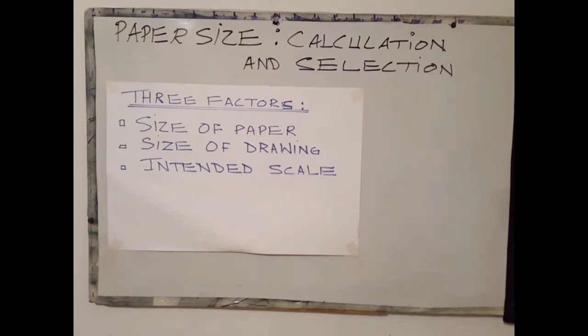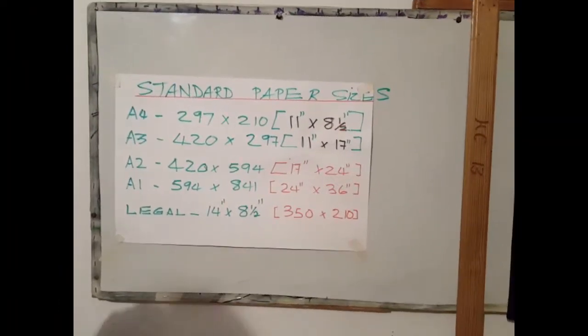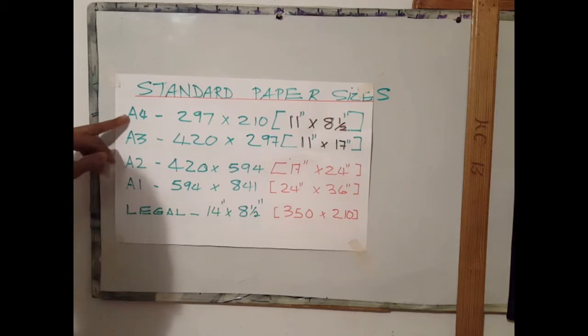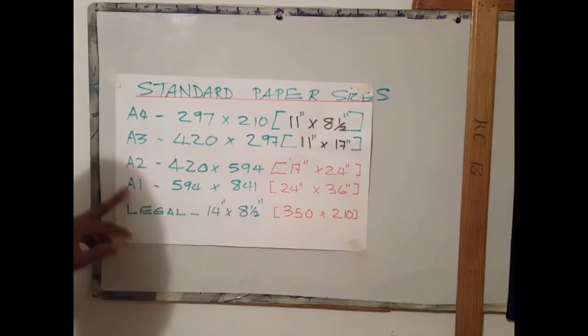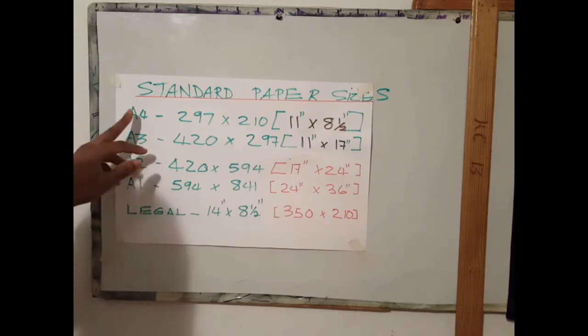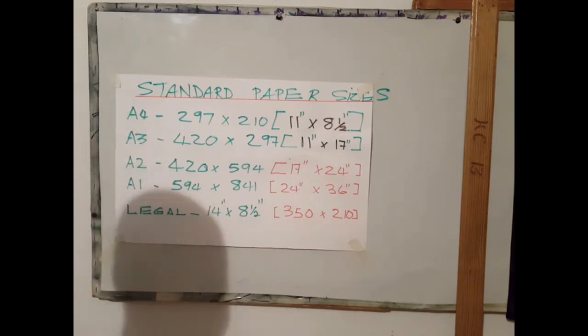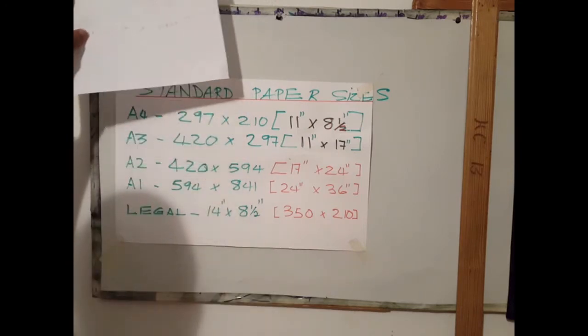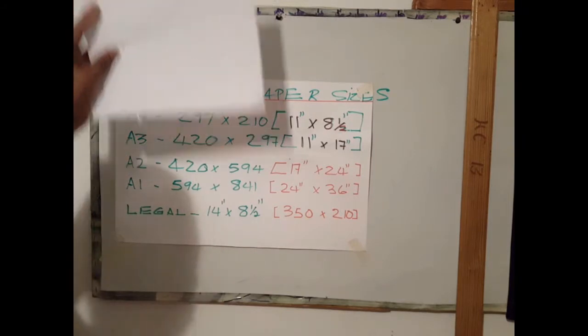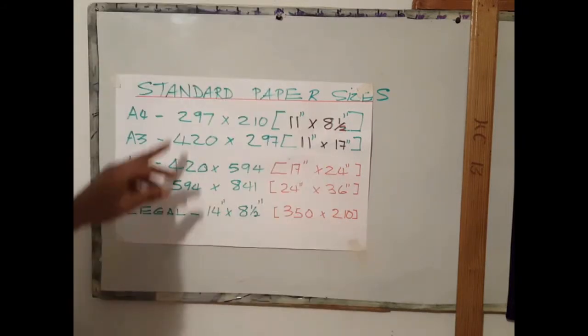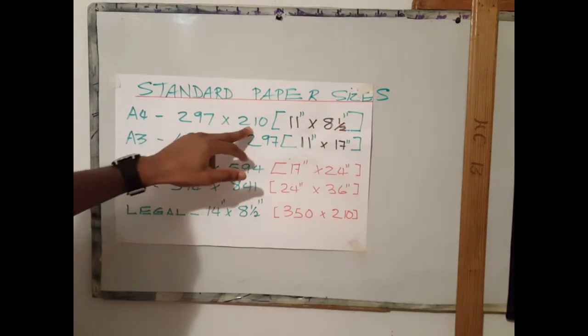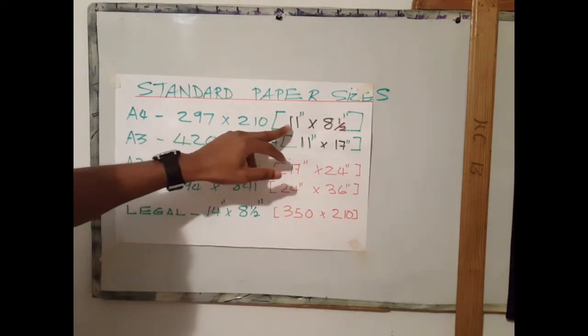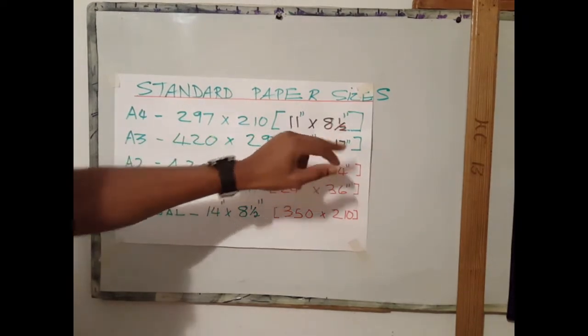There are some standard sized papers that we normally use for drawing. The standard paper sizes are A4, A3, A2, A1 and legal. A4 paper is our standard letter size paper that we use in our everyday computer.